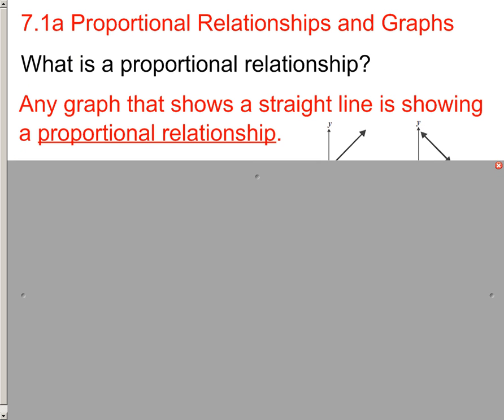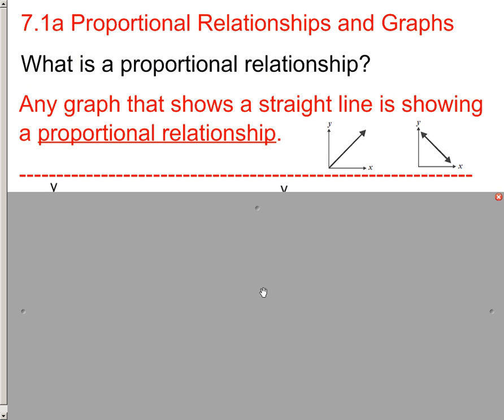I'm going to take a look at proportional relationships and what that means when you look at them when they're graphed. Basically, a proportional relationship, when you look at it on a graph, it's going to create a straight line. It's either going to go up to the right or it's going to go down to the right.